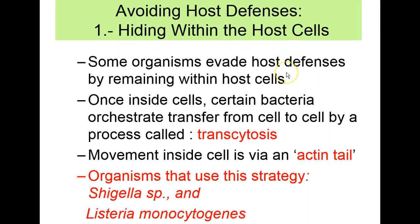Some organisms evade host defenses by remaining within host cells. We looked at Shigella species, which use the antigen sampling cells to gain access to deeper tissue. Shigella can hide within epithelial cells in order to avoid the immune system. It can move between cells by a process called transcytosis, which uses the cell's cytoskeleton to propel the bacteria from one cell to the next using what's called an actin tail.